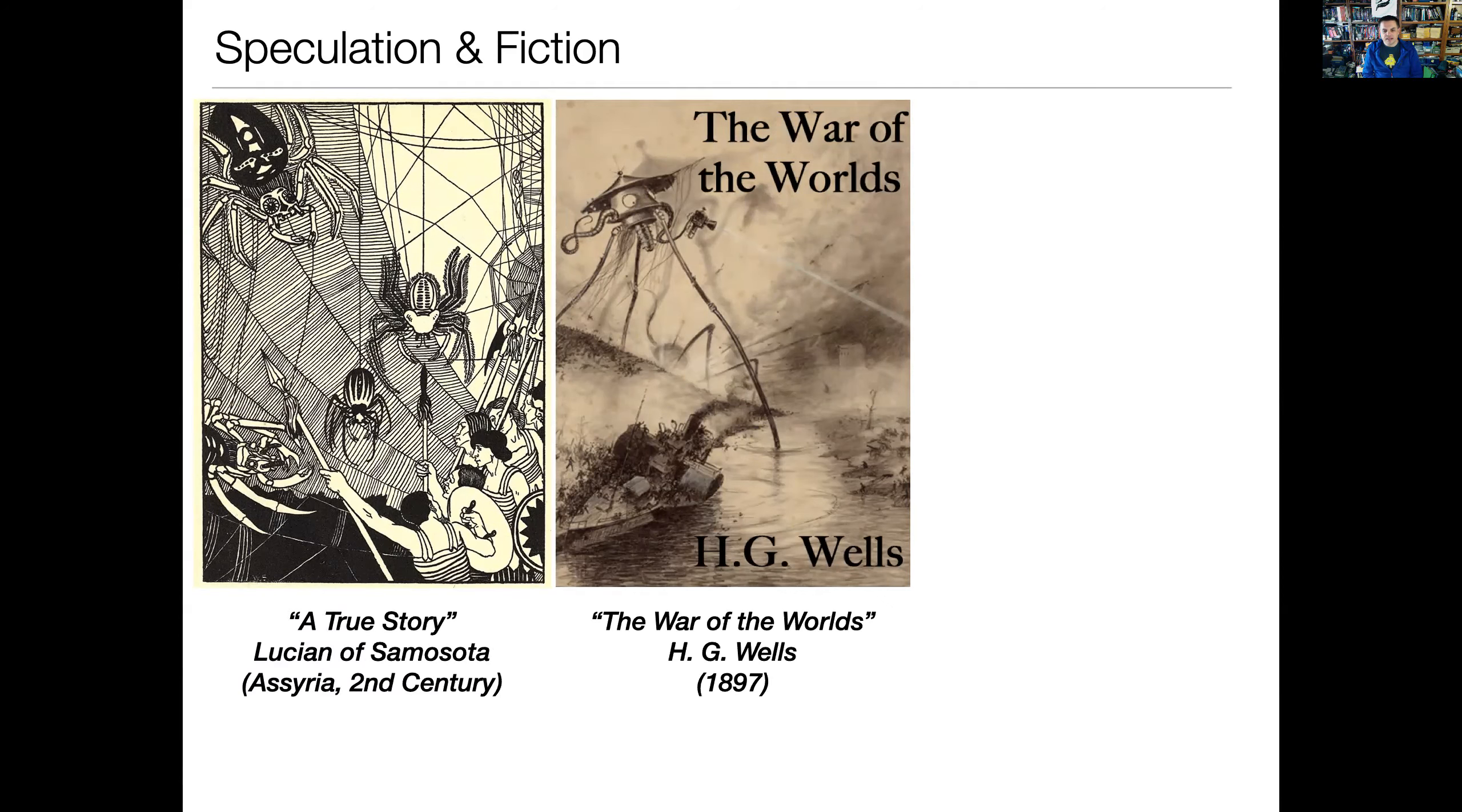This is in Assyria which is in modern day southeast Turkey in the second century. And so this was a science fiction story where he speculated on life elsewhere on other worlds in the universe. More modern fiction, the kind of beginning of modern alien invasion stories really was The War of the Worlds written by H.G. Wells. This was serialized in 1897 and speculated not on life from elsewhere in the galaxy but life from elsewhere right here in the solar system. What would happen if there was life on Mars?